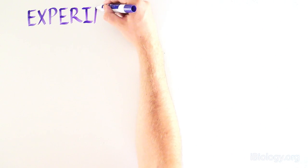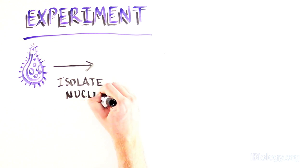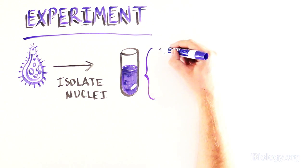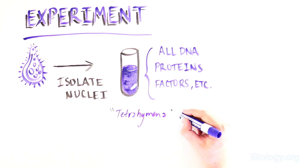Specifically, these scientists wanted to find out if there was a factor that added telomeres onto DNA in tetrahymena nuclei. These scientists isolated the nuclei of tetrahymena, which contains all of the DNA and lots of other proteins and factors. We'll call this the tetrahymena extract.